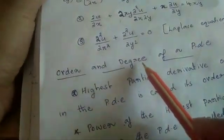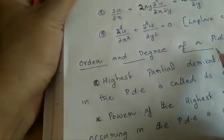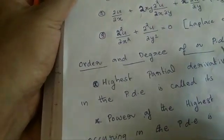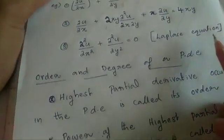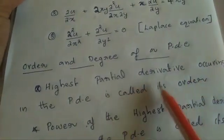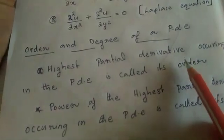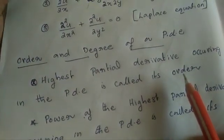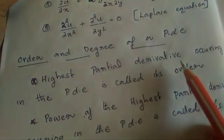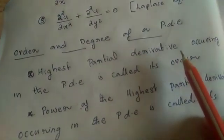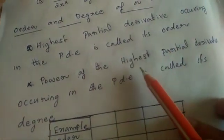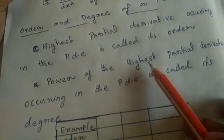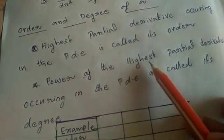Now, the order and degree of a PDE: the order of the highest partial derivative occurring in the PDE is called its order. The power of the highest partial derivative occurring in the PDE is called its degree.